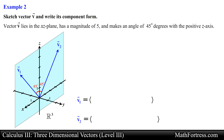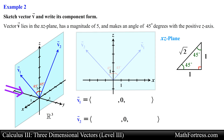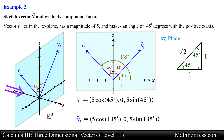Since the vectors lie in the xz plane, the vectors will have a y component equal to 0. At this point it is just a matter of using right triangle trigonometry to find the components of each vector. If we change our point of view and focus on the xz plane, the first vector would make an angle of 45 degrees relative to the positive x axis, and the second vector would make an angle of 135 degrees relative to the x axis.